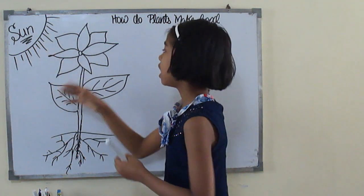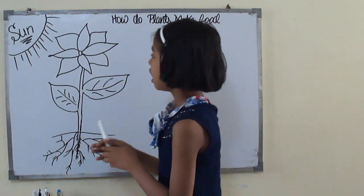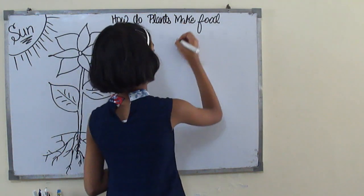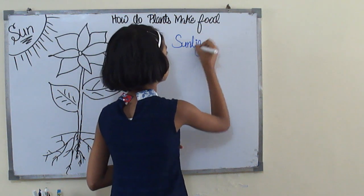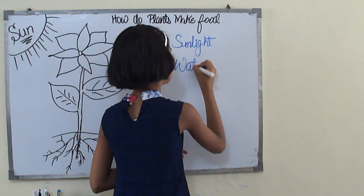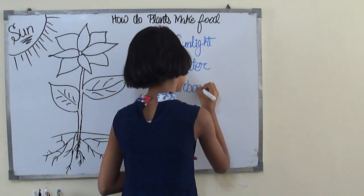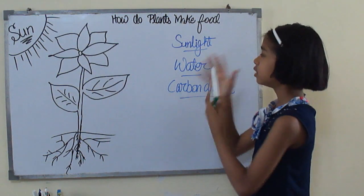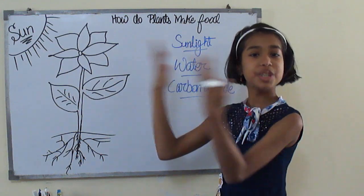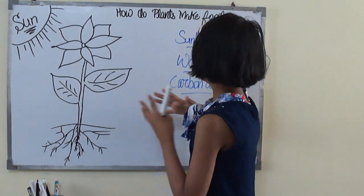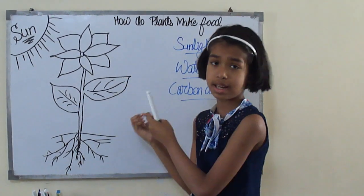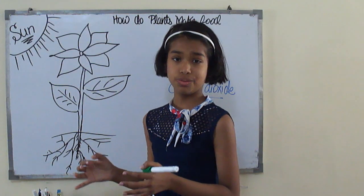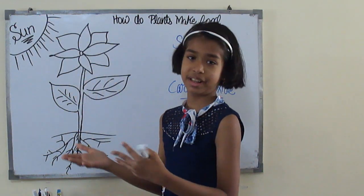Firstly, here is the sun and here is the plant. The plant uses three basic raw materials: sunlight, water, and carbon dioxide. Let's talk about sunlight first. Sunlight comes from the sun, which is the primary source of energy. The plant directly consumes this energy from the sun, and we indirectly consume that.